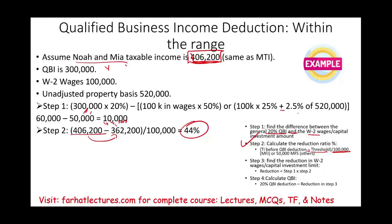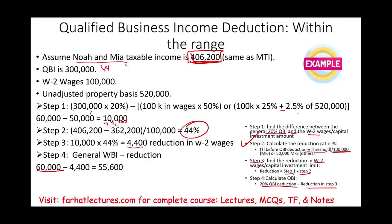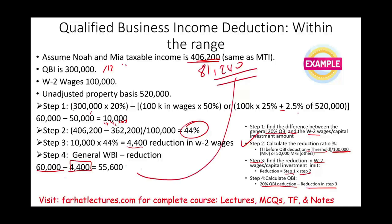Step three: find the reduction — step one times step two: $10,000 times 44% = $4,400. Step four: 20% of QBI minus the step three reduction: $60,000 minus $4,400 = $55,600. We also check the overall cap: $406,200 times 20% = $81,240. Since $55,600 does not exceed $81,240, the qualified business income deduction is $55,600.